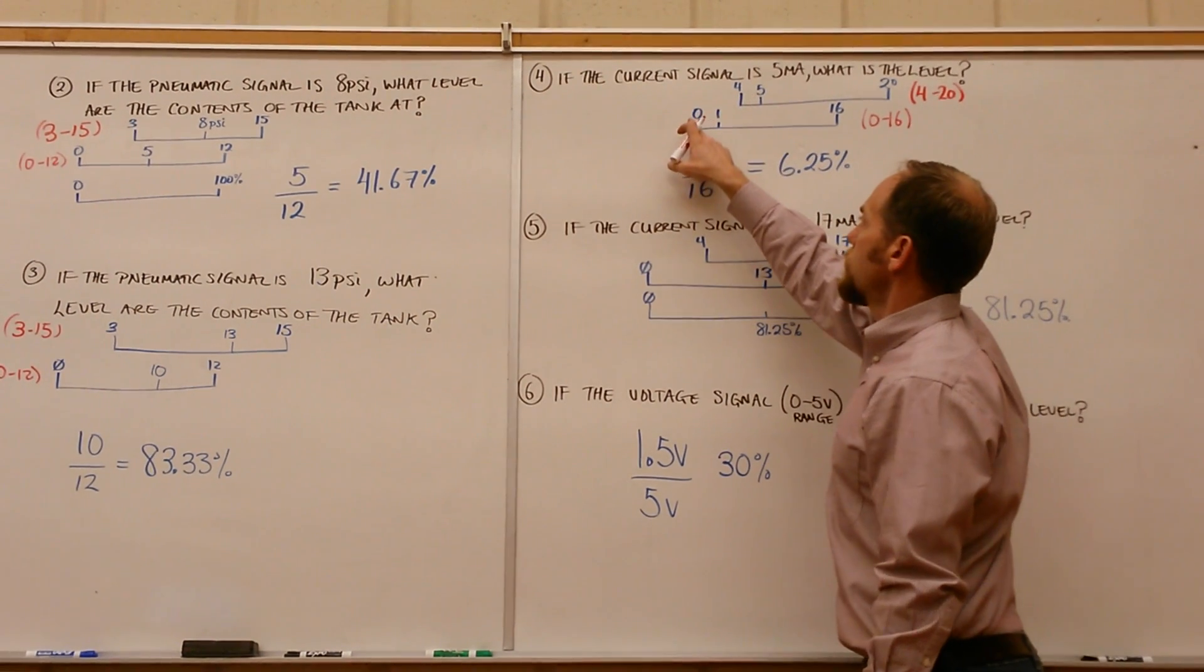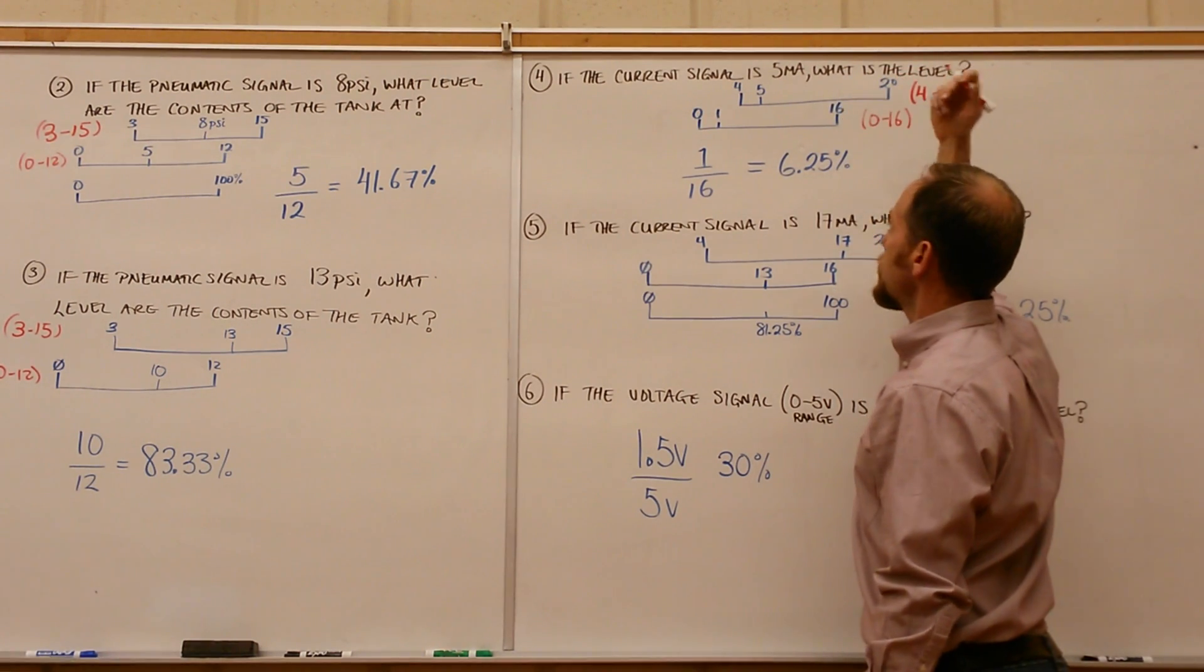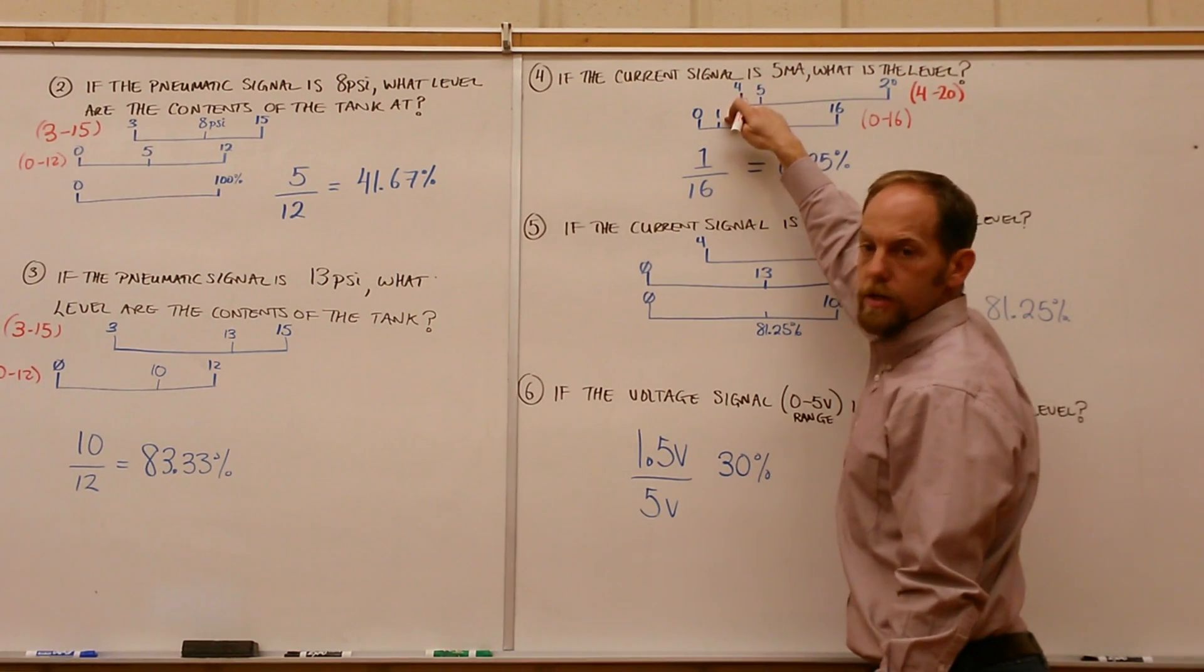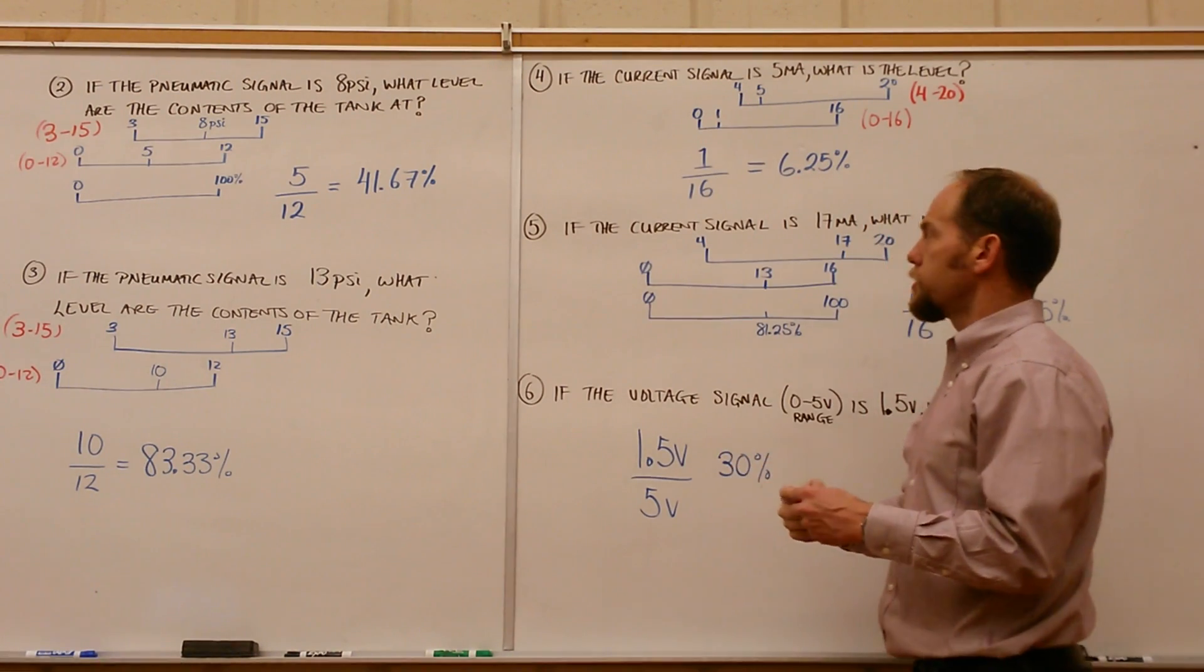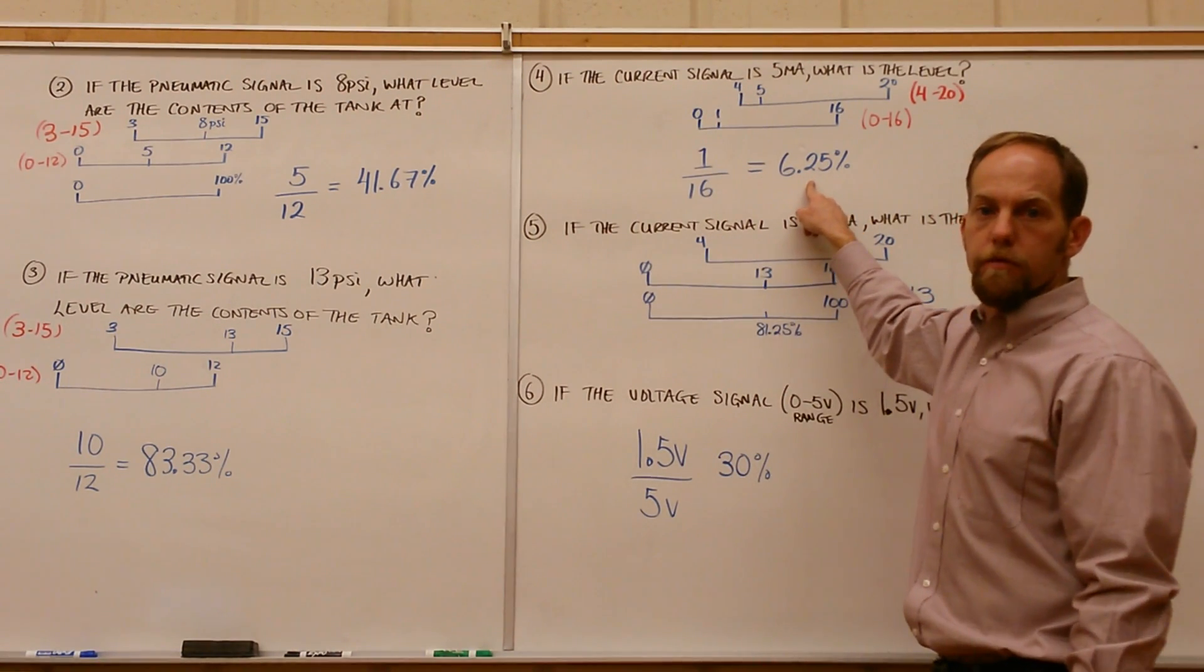4 minus 4 gives you 0. 20 minus 4 gives us 16, so now we're 0 to 16. 5 minus 4 gives us 1, and now we can find our percentage. Take 1 divided by 16, which gives us 6.25%.